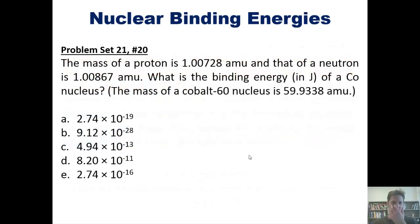Let's take a look at some problems. This first one says the mass of a proton is this number, and that of a neutron is this number. What is the binding energy in joules of a cobalt nucleus, keeping in mind that the cobalt nucleus's mass is this number? I'm not going to do this for you here, but if you like, you can click the link to a separate video where I'll show you how to do it on the board.